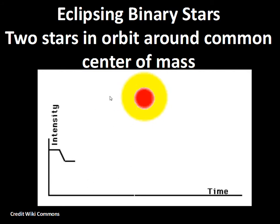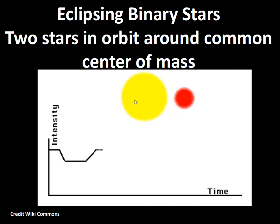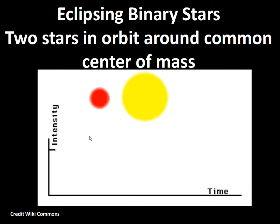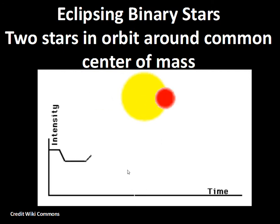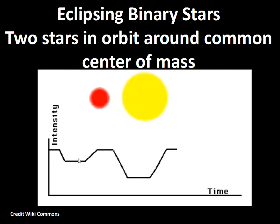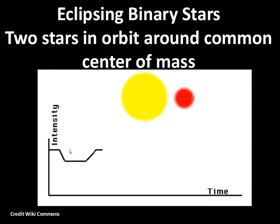Now, eclipsing binary stars. This will be a spectroscopic binary, but in addition, if the orbit is really edge-on to us, then one star will pass in front of the other star and the brightness of the system will change. When the two stars are side by side, we get maximum brightness. When the red star blocks some of the light from the yellow star, we get an eclipse occurring and there's a change in the brightness of what we see at the Earth. Eclipsing binary stars are systems that can reveal the mass of the star, but we can do more.